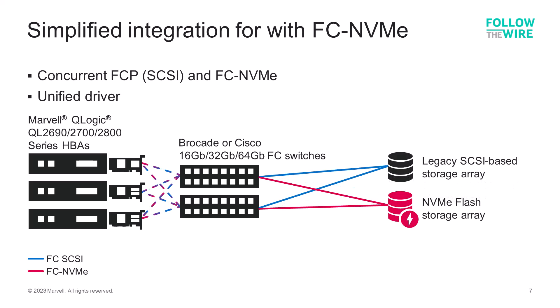Fiber channel supports FC-SCSI and FC-NVMe on the same fabric running concurrently and to the same ports. Customers can add new NVMe storage to their existing fiber channel SAN without having to make any hardware changes to the switches or the HBAs. All that is needed is to zone the new storage resources into the fabric.